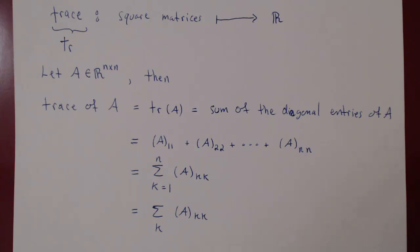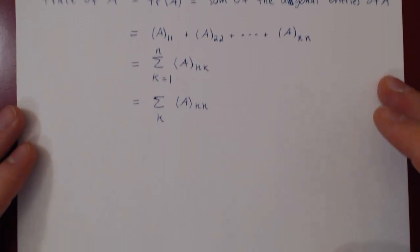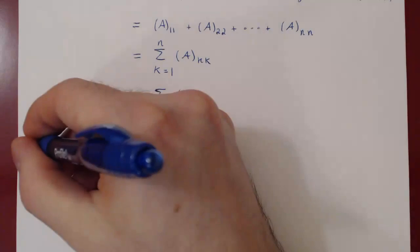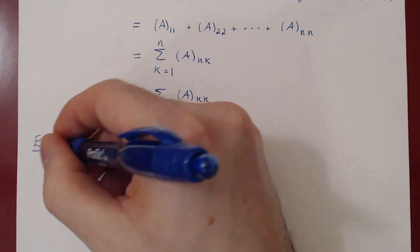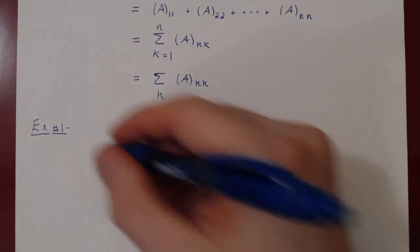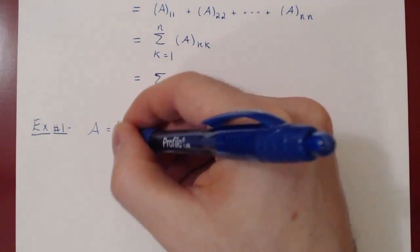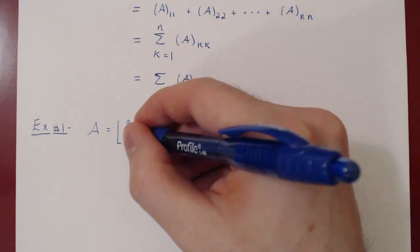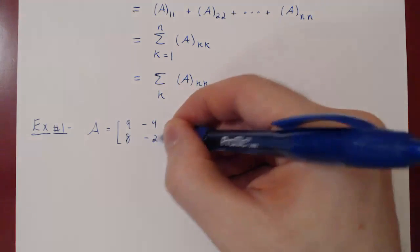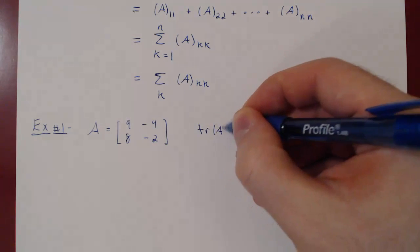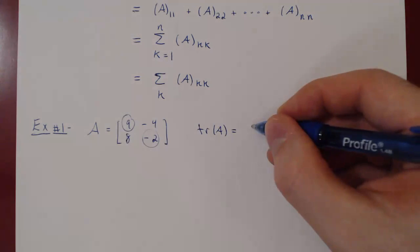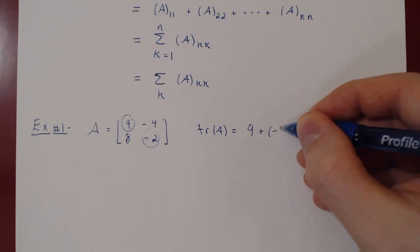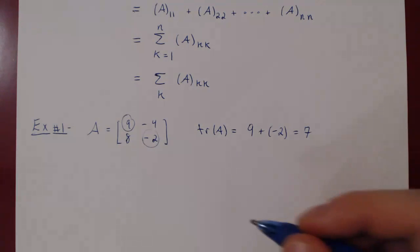Let's consider two simple examples and then look at the properties of the trace. What if A was a 2 by 2 matrix: 9, negative 4, 8, negative 2? Then the trace of A is the sum of the diagonal entries, so it is 9 plus negative 2, which is simply 7.